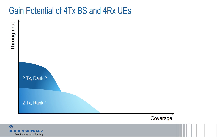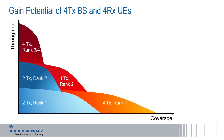In good conditions, we can use two streams, rank 2. And at the cell edge, we can only use one stream — rank 1 — so 2 transmit, rank 1. Now you see what comes on top if we have four transmitters at the base station and four receivers on the UE side. On the left, you see a very high throughput close to the base station — this is exactly our 4x4 MIMO gain: four transmitters, rank 4, four different streams. Rank 3 is part of this curve as well.